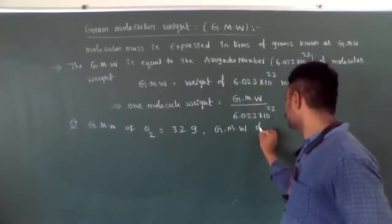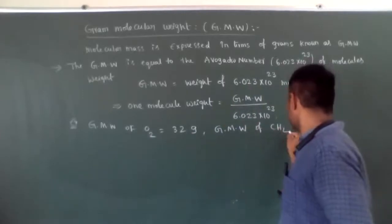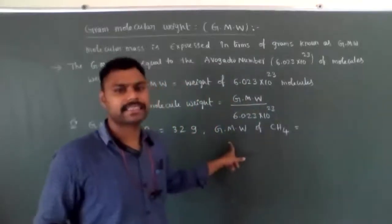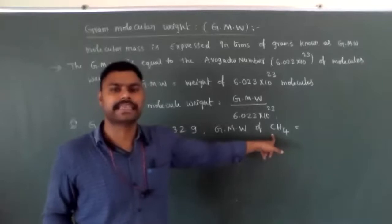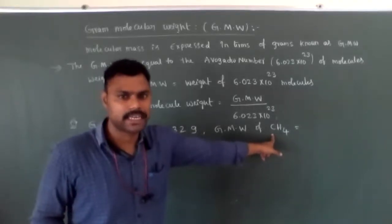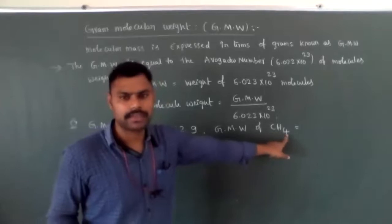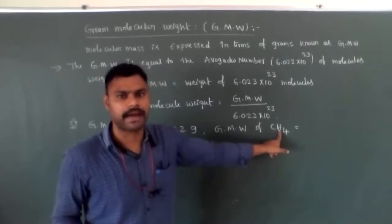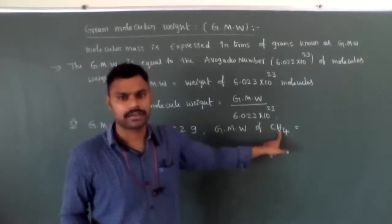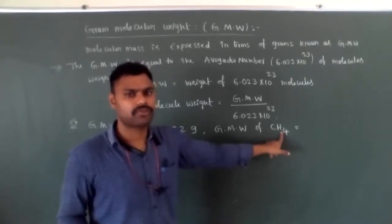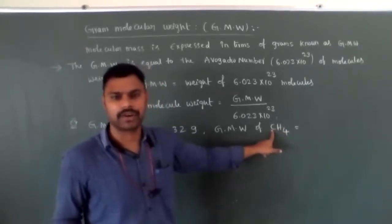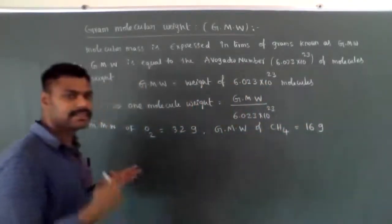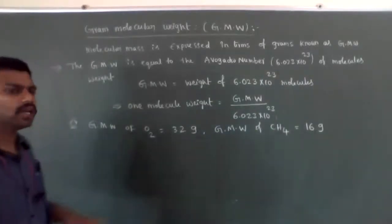Let's calculate the gram-molecular weight of CH4. Gram-molecular weight is nothing but the sum of the gram-atomic weights of all atoms in a molecule. CH4 has 1 carbon atom and 4 hydrogen atoms. Carbon's gram-atomic weight is 12, and each hydrogen atom is 1, so 4 hydrogen atoms give 4 grams. Carbon is 12 grams. Total is 16 grams.